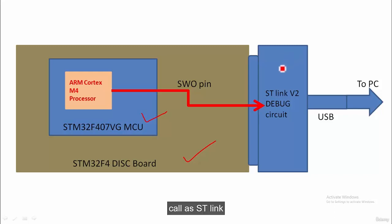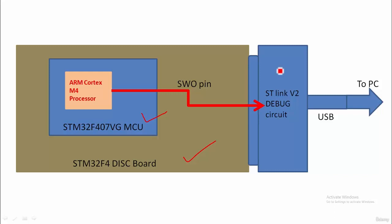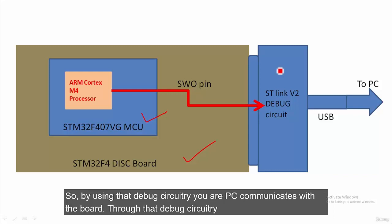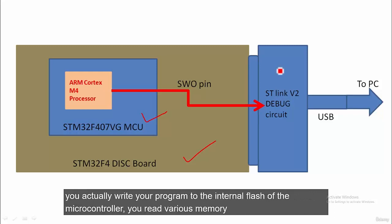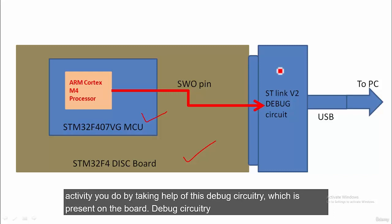Your board also has additional circuitry at the front end called the STLink V2 or V1 on-board debug circuitry. Using that debug circuitry, your PC communicates with the board — you write programs to the internal flash of the microcontroller, read memory locations, make the processor run or stop. All debug-related activities are done through this debug circuitry present on the board.